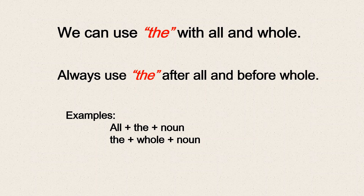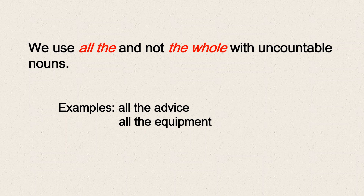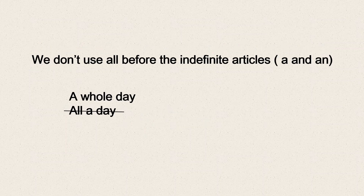The pattern is: all + the + noun, and the + whole + noun. We use 'all the' and not 'the whole' with uncountable nouns. For example: 'all the advice' — advice is uncountable — or 'all the equipment.' We don't use 'all' before the indefinite articles 'a' or 'an.' For example, we say 'a whole day' but not 'all a day.' When indefinite articles are used, we use 'whole' but not 'all.'